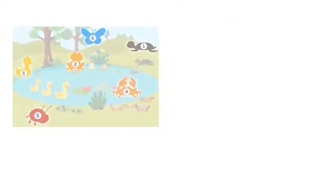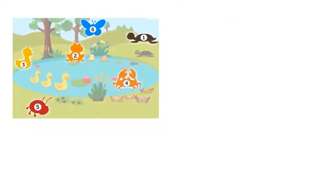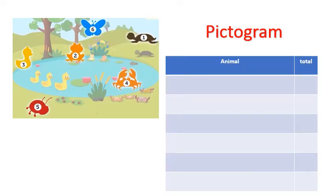Let's see how to show the data we collected in a pictogram. We saw 6 butterflies. 1, 2, 3, 4, 5 and 6. We saw 1 turtle.